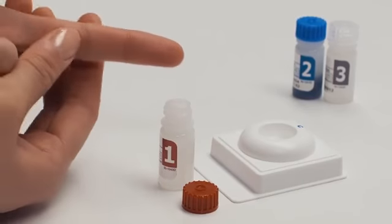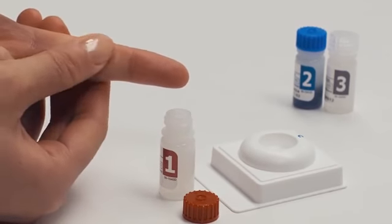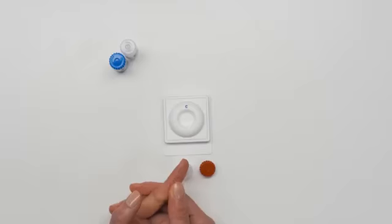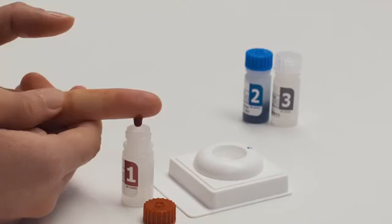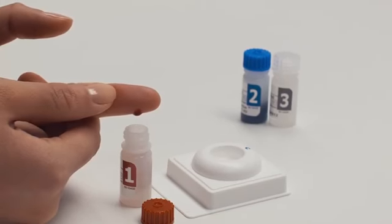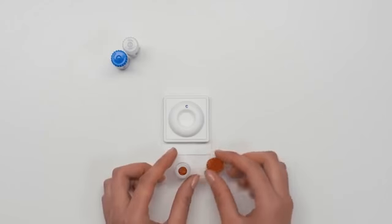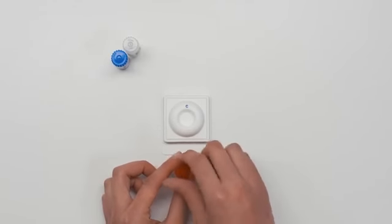Rub the finger to get a larger round drop of blood. Let one drop fall into bottle one. Twist on cap of bottle one. Apply a bandage.